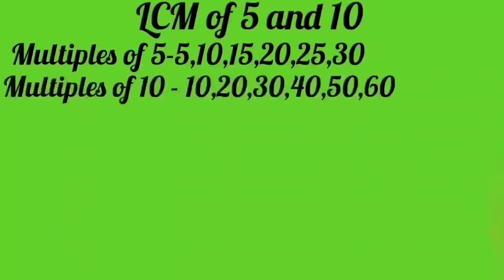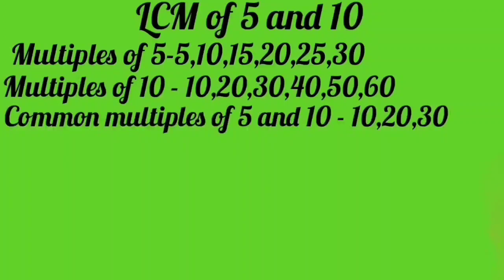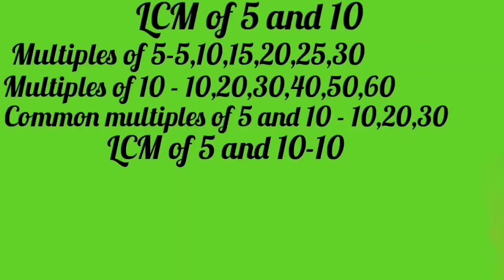Now write multiples of 10. These are 10, 20, 30, 40, 50, 60 and so on. Now write common multiples of 5 and 10. That are 10, 20, 30. But out of these, 10 is the least common multiple. So least common multiple of 5 and 10 is 10.